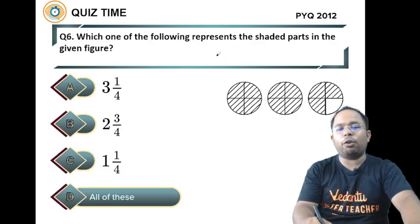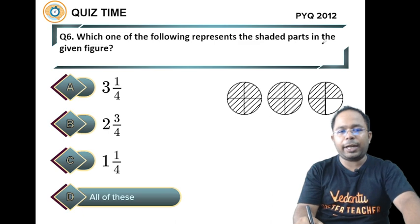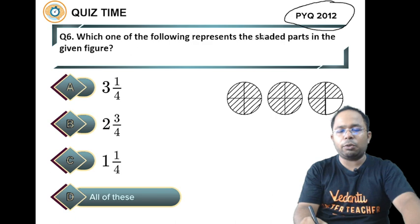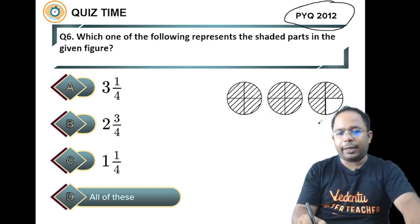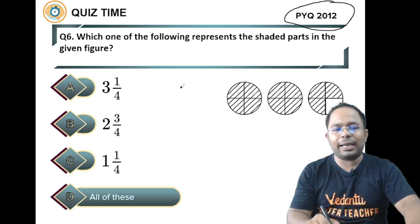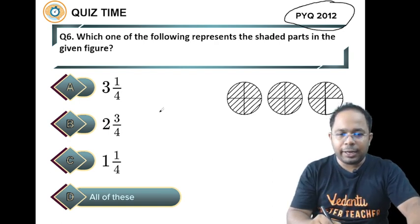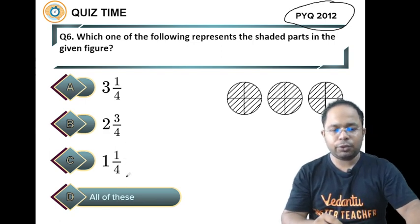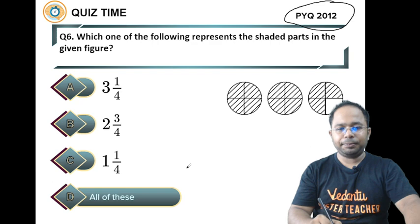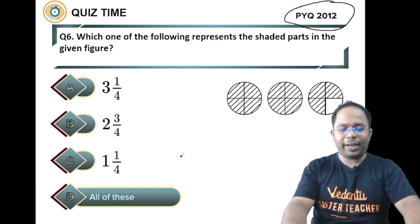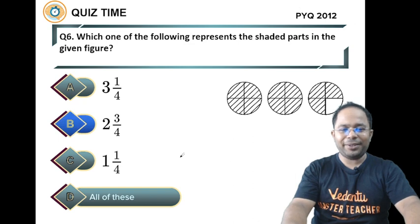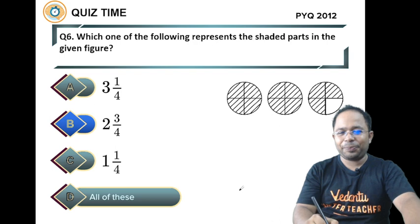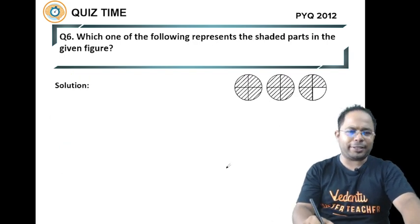Next question is: which one of the following represents the shaded parts in the given figure? This is previous year question 2012. Looking at this figure, we need to tell which fraction this represents. Options are 3 1 by 4, 2 3 by 4, 1 1 by 4, or all of these. The answer is 2 3 by 4.